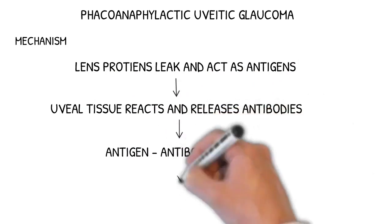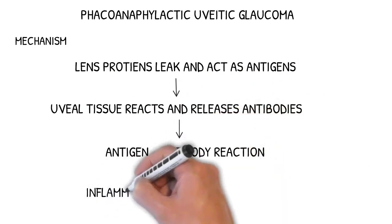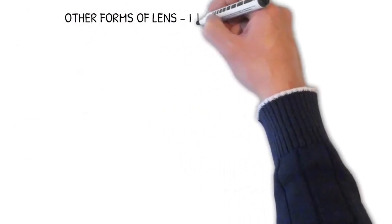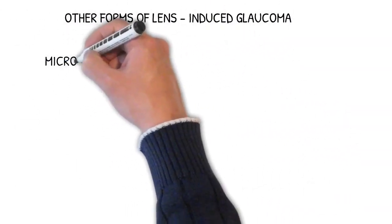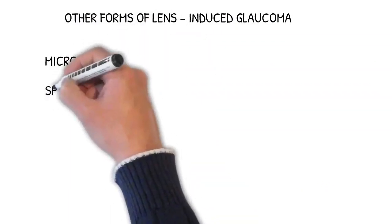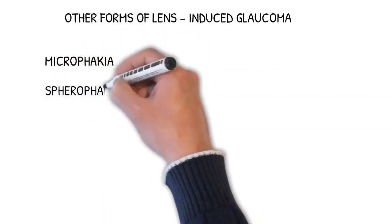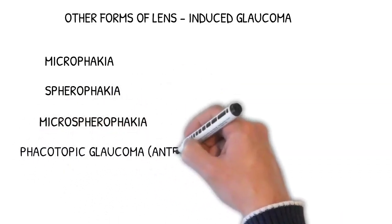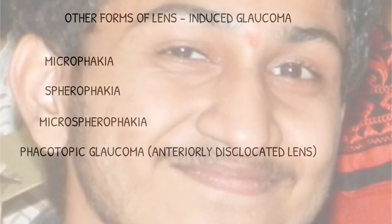Other forms of lens-induced glaucoma: microphakia - abnormally small lens; spherophakia - sphere-shaped lens; microspherophakia - abnormally small and sphere-shaped lens; phacotopic glaucoma, which is anteriorly dislocated lens.